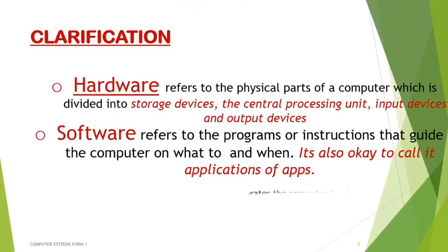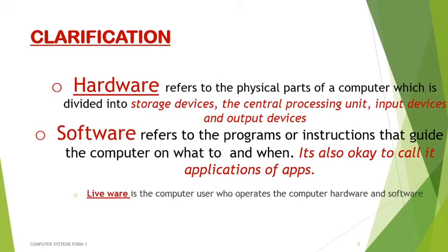Hardware refers to the physical parts of a computer, divided into four: storage devices, CPU, input devices, and output devices. Software refers to the programs or instructions that guide the computer on what to do — also called applications or apps. Liveware is the computer user who operates the hardware and software; without liveware, the computer system does not exist.